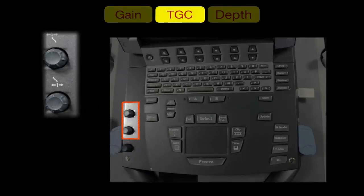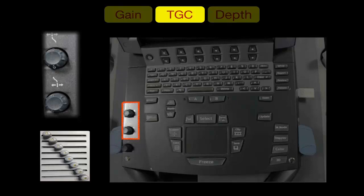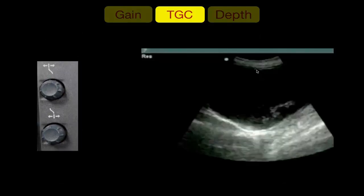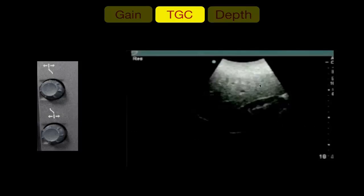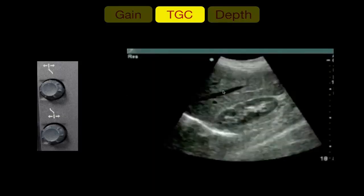TGC allows you to adjust brightness with better control of the near field or far field independently. One button adjusts the near field brightness while another adjusts the far field. For example, if the near field is very dark and the far field is very bright, you increase gain in the near field and decrease it in the far field. You want the image balanced so blood in the hepatic vein appears anechoic, the diaphragm appears hyperechoic, and structures like the liver or kidney cortex appear in between.